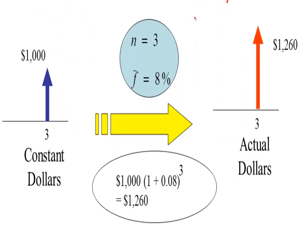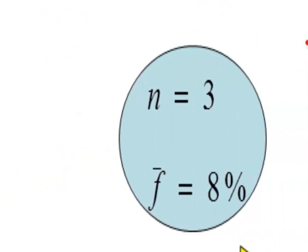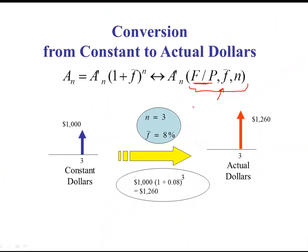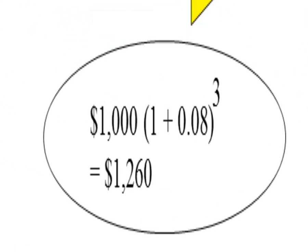If the constant dollars equal $1,000, N equals 3, and the average inflation rate F-bar equals 8%, what are the actual dollars after 3 years? The actual dollars equal 1000 multiplied by (1 plus 0.08) to the power 3.